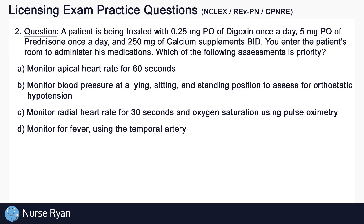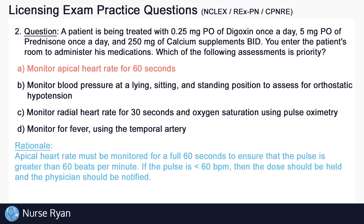The answer is A — monitor apical heart rate for 60 seconds. Apical heart rate must be monitored for a full 60 seconds to ensure that the pulse is greater than 60 beats per minute. Digoxin is a medication often administered for heart failure, and part of how it works is it reduces heart rate. So if the pulse is less than 60 beats per minute, the dose should be held and the physician notified. Monitoring apical heart rate may also help assess for possible arrhythmias.